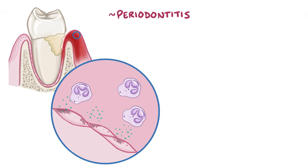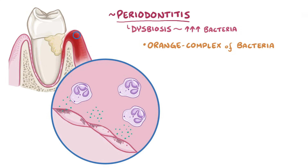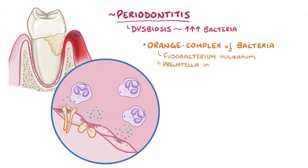In periodontitis, the process of dysbiosis is often more extreme, with even more disease-causing bacteria flourishing in the mouth. One classic hypothesis suggests that the first step in periodontitis is the presence of the so-called orange complex of bacteria, which includes gram-negative anaerobic bacteria like Fusobacterium nucleatum and Prevotella intermedia.